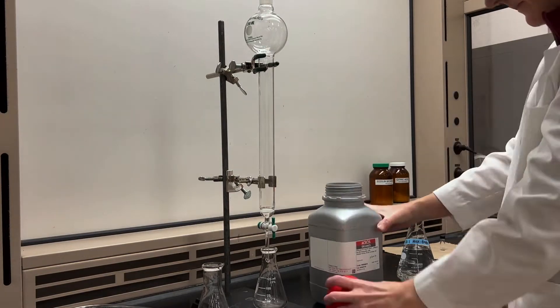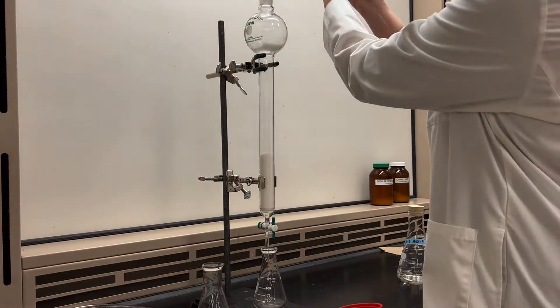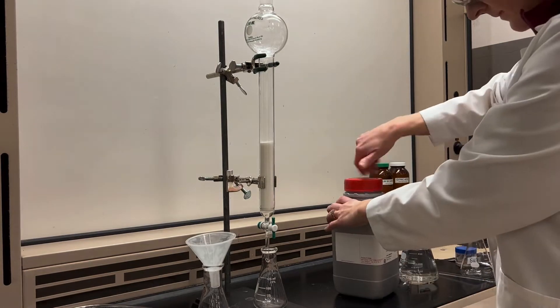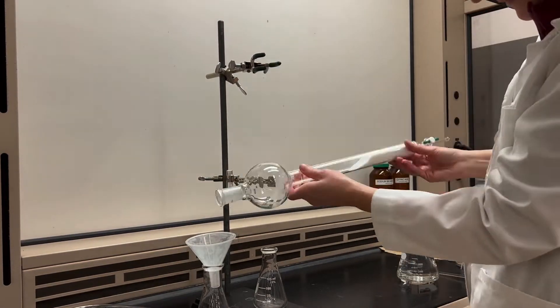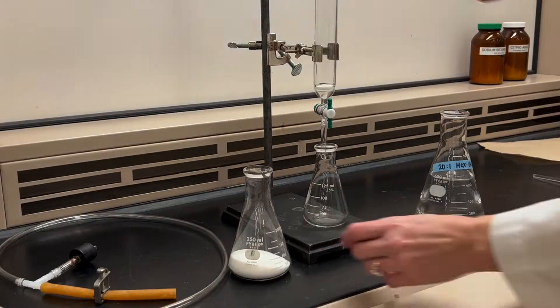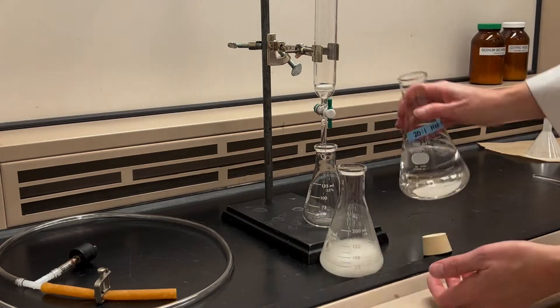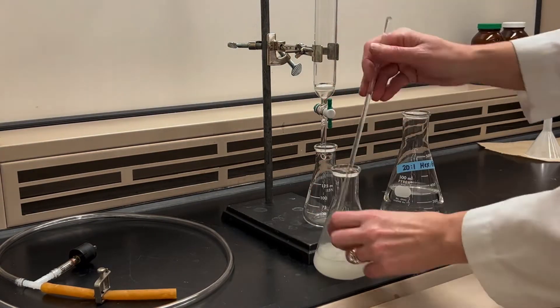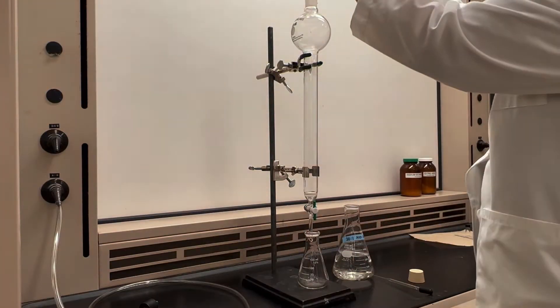As a review, let's quickly go through how you prepare and run a column. You first want to add silica gel to the column in the fume hood, then pour that out into an Erlenmeyer flask, add solvent to the flask and swoosh it around to make a slurry.